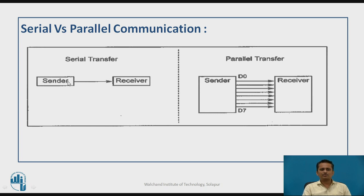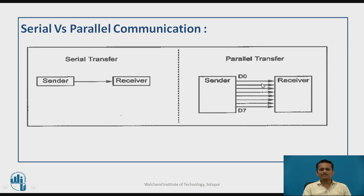Let us compare serial and parallel communication. In serial communication, ideally only one line is required between sender and receiver. In parallel communication, if you assume 8-bit data is transmitted simultaneously, eight different lines are required between sender and receiver. If the distance between sender and receiver is large, serial communication requires only one wire, whereas parallel communication requires eight lines.